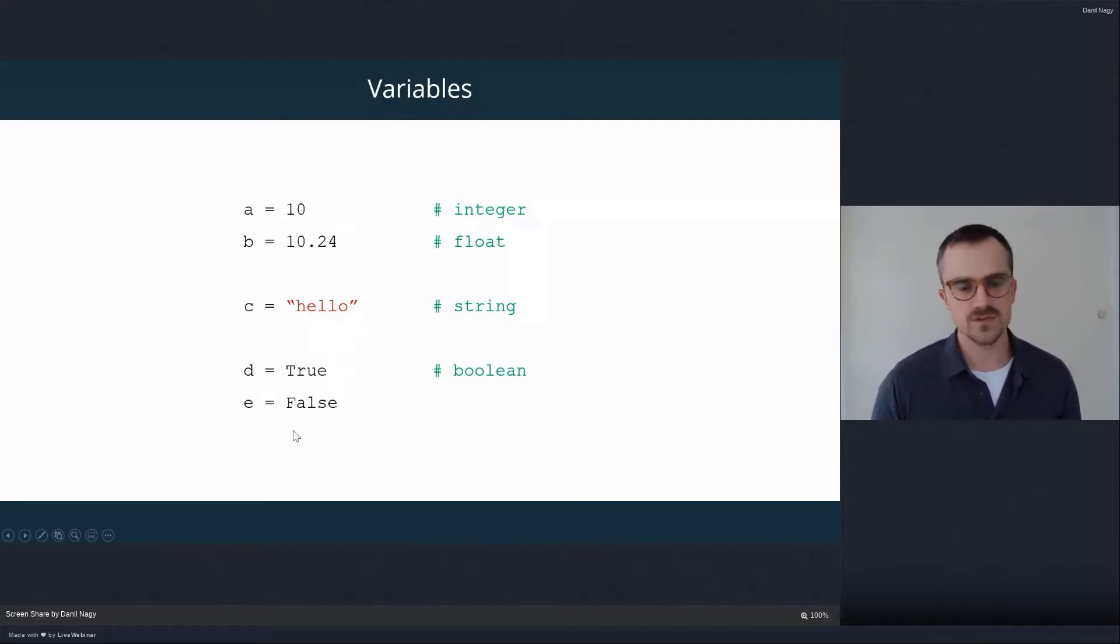And the final data type we'll be using are called Booleans. And these are just true, false statements. But in Python, syntax and spelling is very strict. So when you want to specify a variable as a Boolean, whether true or false, you have to write it exactly like this with an uppercase T or an uppercase F.